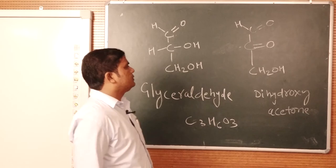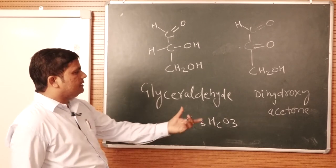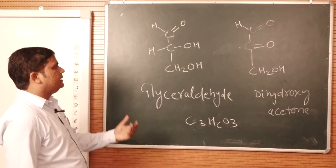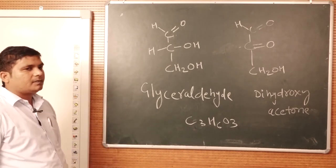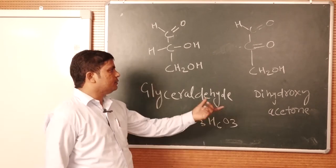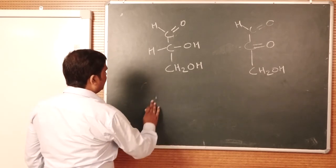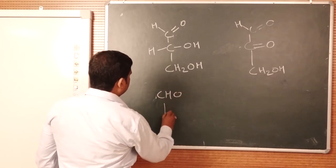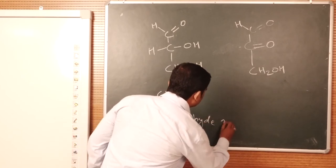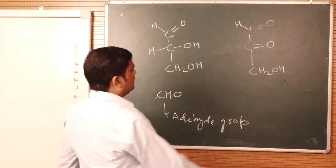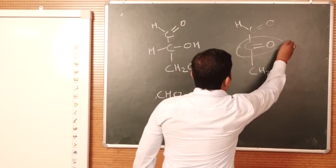On the basis of glyceraldehyde and dihydroxyacetone, carbohydrates are divided into two types: aldose and ketose. In the aldose form, the aldehyde group (CHO group) is present. In dihydroxyacetone, the ketose group is present, representing C=O.